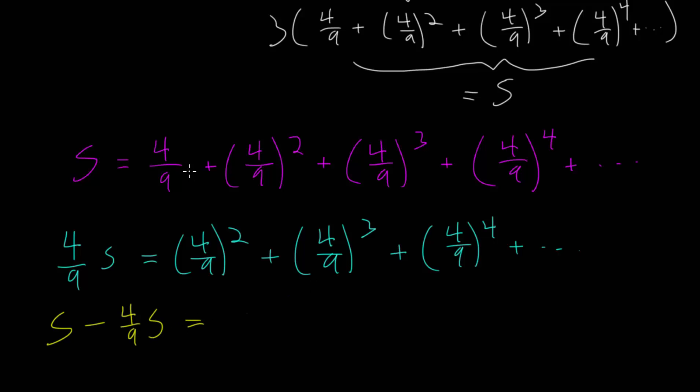Notice that we start with this top sum, and we're subtracting the blue one down below. We have 4 ninths, but there is no 4 ninths here, so that will remain. And we have 4 over 9 squared minus 4 over 9 squared, those will cancel. 4 ninths cubed minus 4 ninths cubed, those cancel. These terms cancel as well, and so on. Every single term in this infinite sum will cancel out during subtraction, except for this first one here.